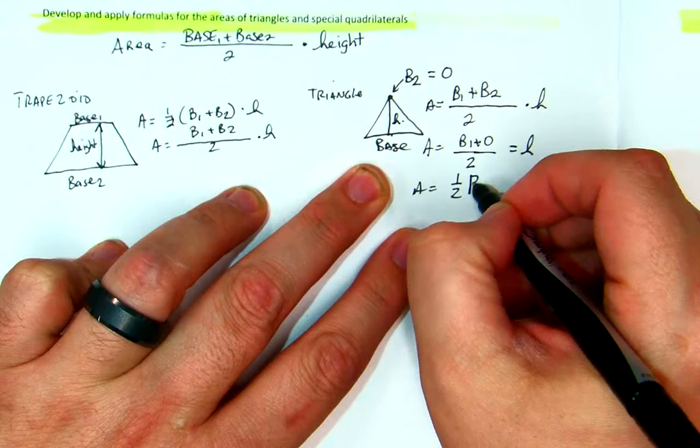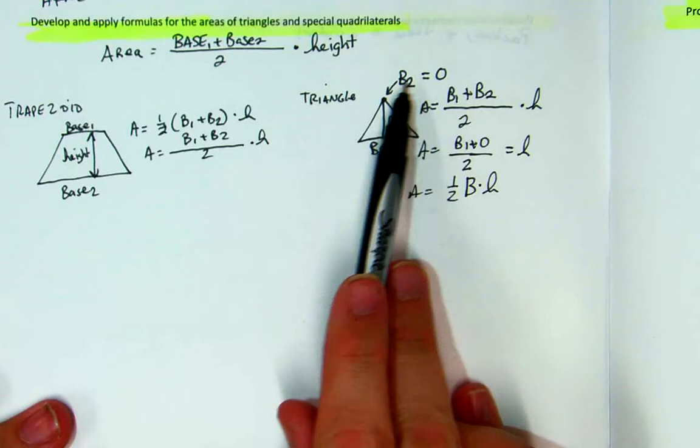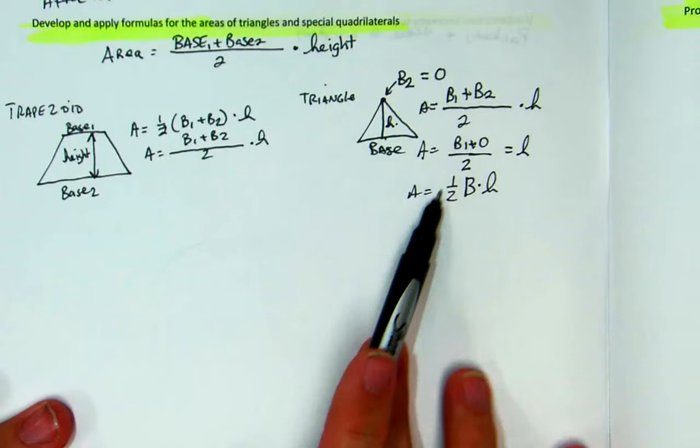But if we remember this formula, we just know that base 2 is 0. It works the same way. That's how we derive the triangle formula from this generic formula that we have.